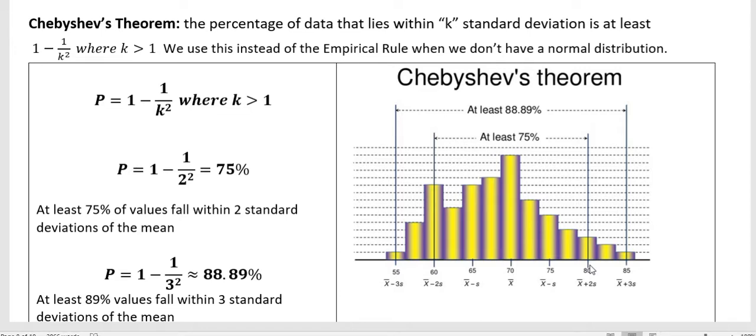But if you plug in a 2 for the second standard deviation here, we have 1 minus 1 over 2 squared, and that's 1 fourth, and 1 minus 1 fourth is 75%, or 75%. If we want to think about that as a percentage, we would be multiplying that by 100 to get that. So what that says is at least 75% of the values fall within two standard deviations of the mean. It's saying at least. That's not exact. It's saying it could be more, but at least 75% of the data is falling there.